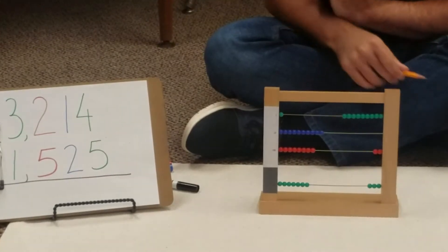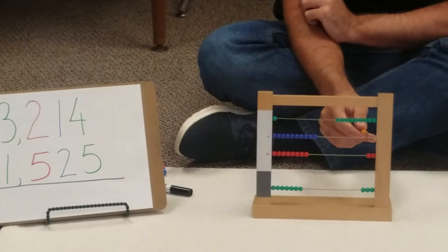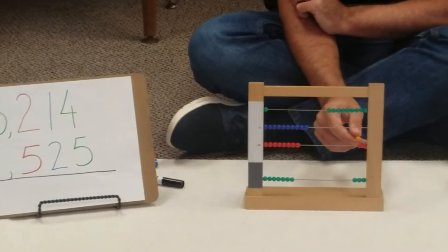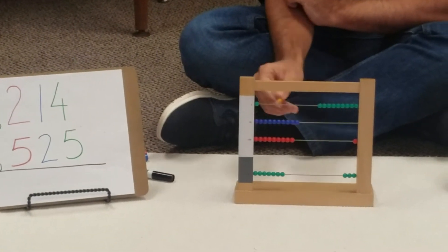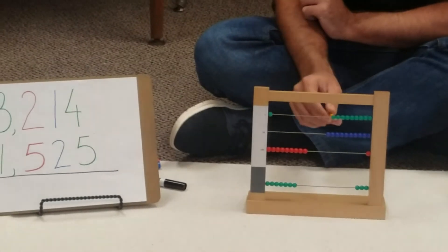Now we need to take away two tens, but we don't have any tens. So we're going to ask our friend in the hundreds, and one hundred is ten tens. Now we take away two tens.